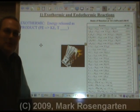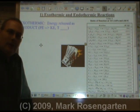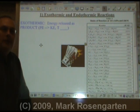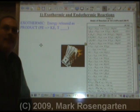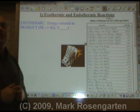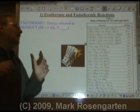Today we do potential energy diagrams. A PE diagram is a map of what's happening to the potential energy of the reactants as they turn into activated complex and then into products. Before we do potential energy diagrams, you need to know the difference between an exothermic reaction and an endothermic reaction.